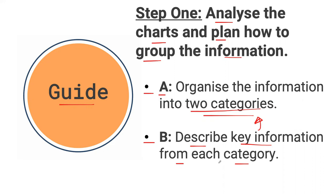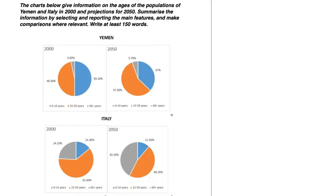Let's get started with our first example, focusing on step one. The writing prompt says: the charts below give information on the ages of the populations of Yemen and Italy in 2000 and projections for 2050. Summarize the information by selecting and reporting the main features and make comparisons where relevant. Write at least 150 words. The most important thing I want to call your attention to is that we will have to make comparisons where relevant.